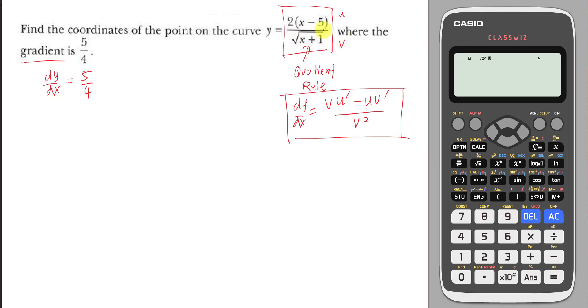My v is the whole thing, square root x plus 1. When I differentiate u, you better multiply the 2 into it. So you differentiate 2x minus 10 actually gives you 2, then you multiply 2.